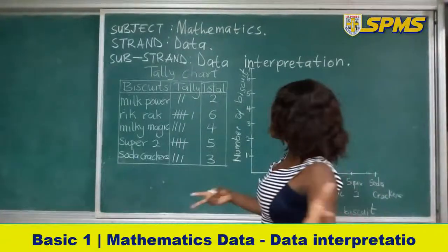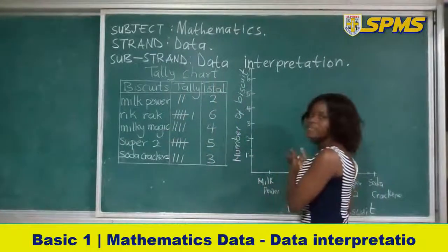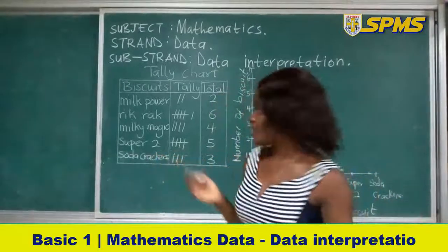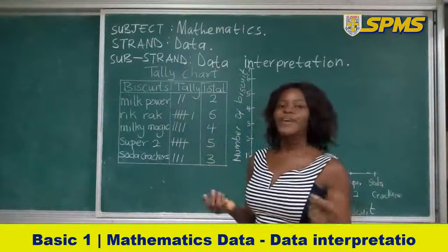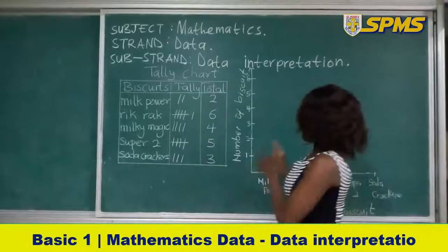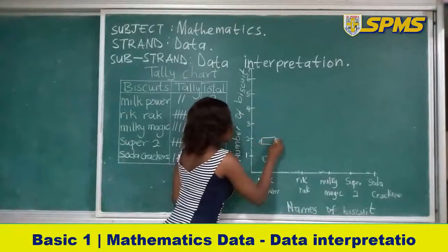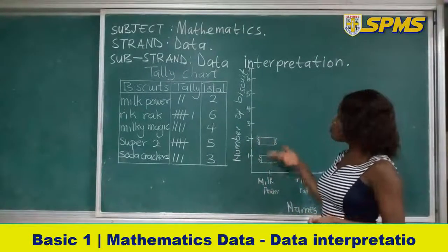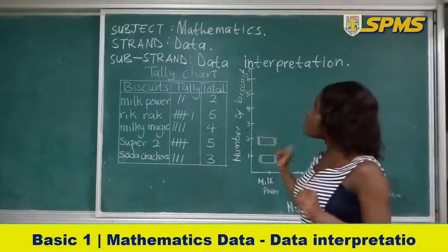So the information gathered here is what you are going to use to draw our pictures here. I hope you get it. Good, I know my children are good. So our first biscuit is Milk Power. How many are they? Two, very good. So we are going to draw Milk Power two over here. So now we can see that we have Milk Power two. I have drawn a picture of Milk Power here.